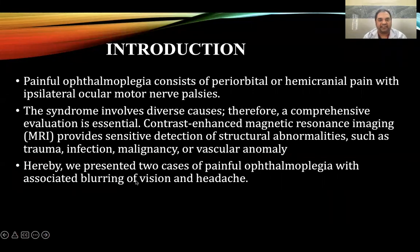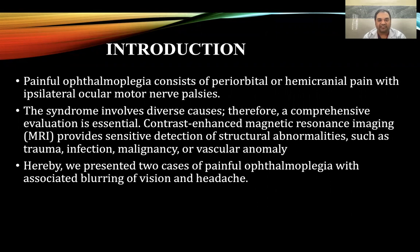Introduction. Painful ophthalmoplegias consists of periorbital or hemicranial pain with ipsilateral ocular motor nerve palsies. The syndrome involves diverse causes, therefore a comprehensive evaluation is essential. Contrast-enhanced MRI provides sensitive detection of structural abnormalities such as trauma, infection, malignancy, or vascular anomalies. Hereby we present two cases of painful ophthalmoplegias with associated blurring of vision and headache.